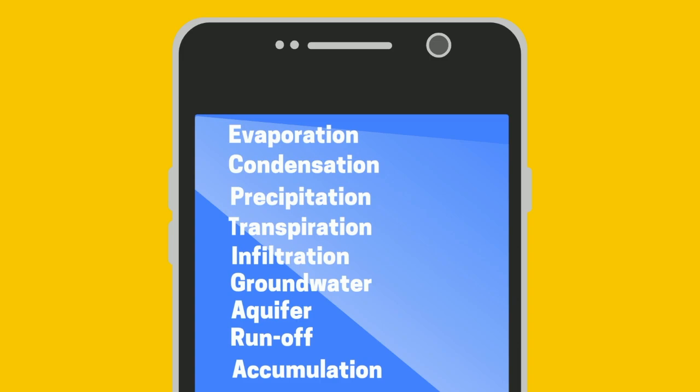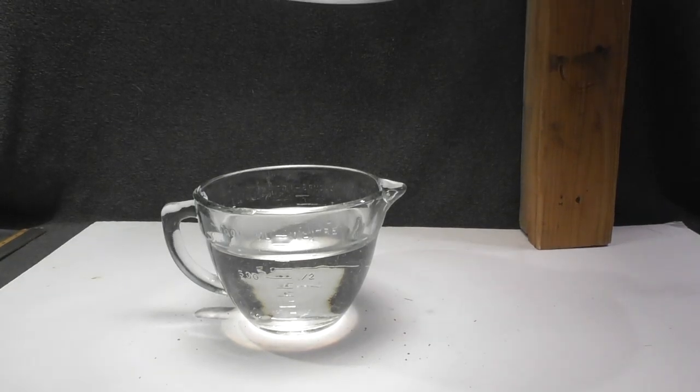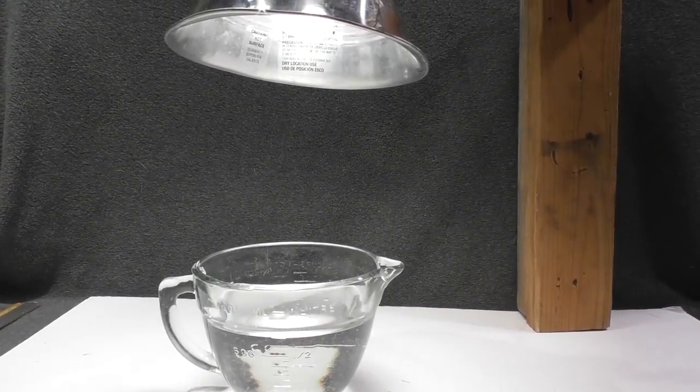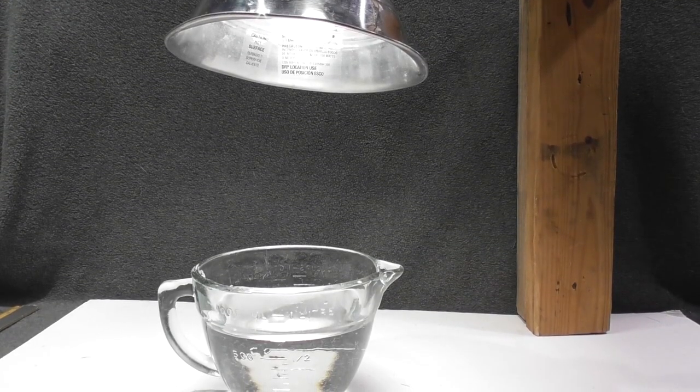So let's start with evaporation. Evaporation occurs when a liquid turns to gas. With this glass of water and the heat from the lamp, evaporation is occurring. The problem is you can't see the evaporation.